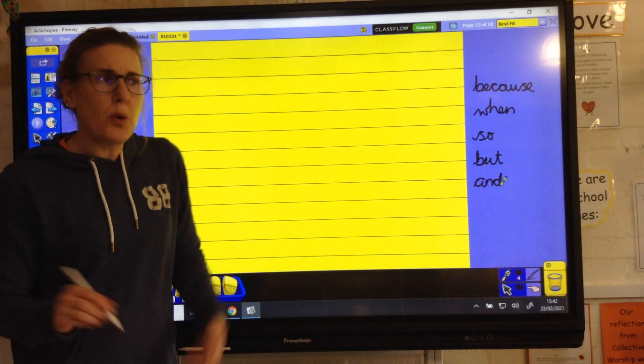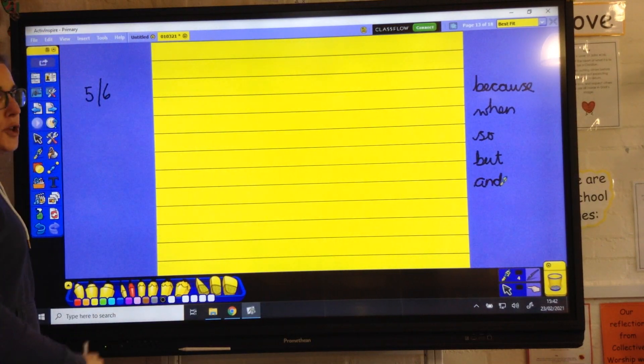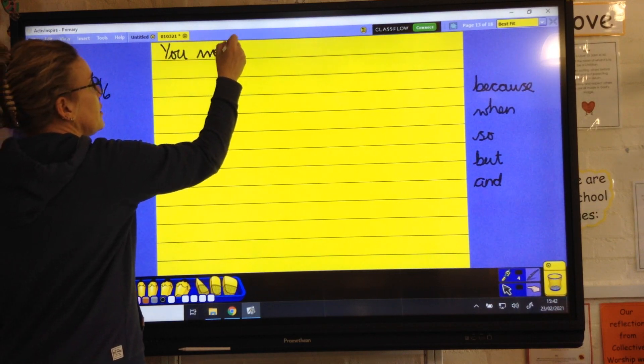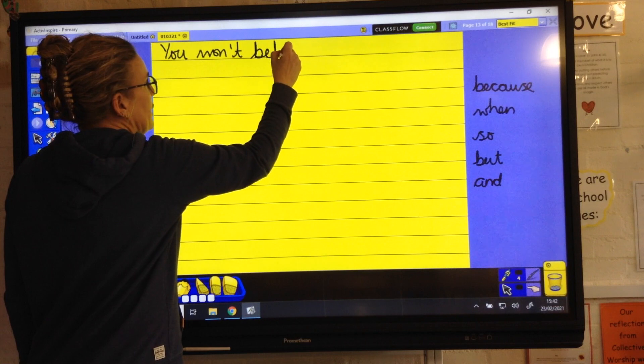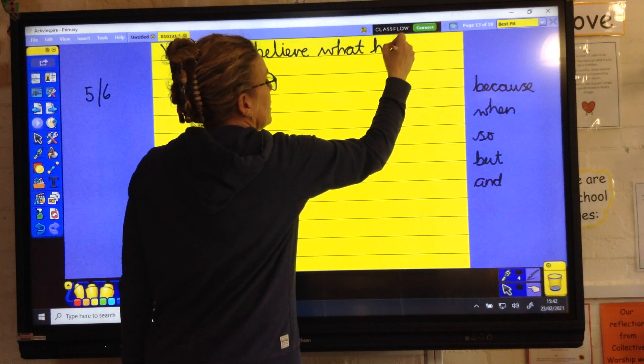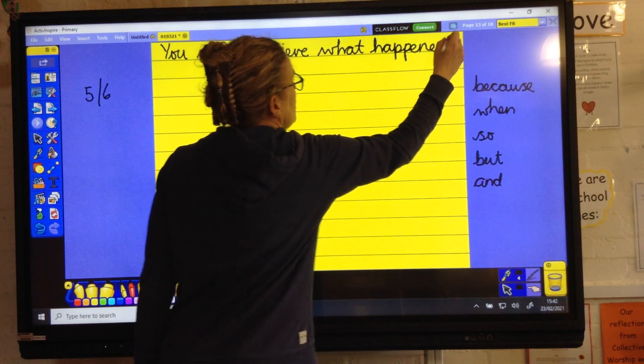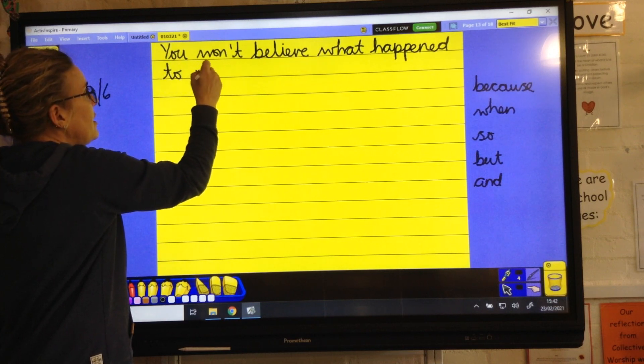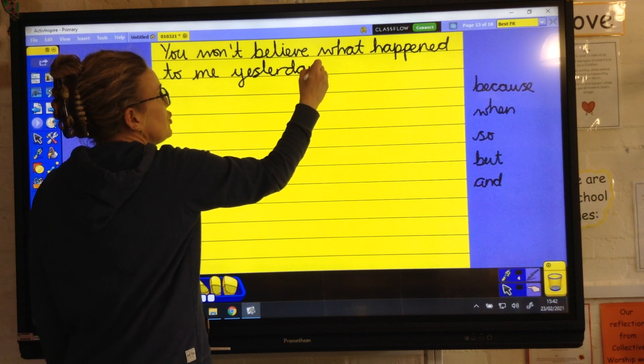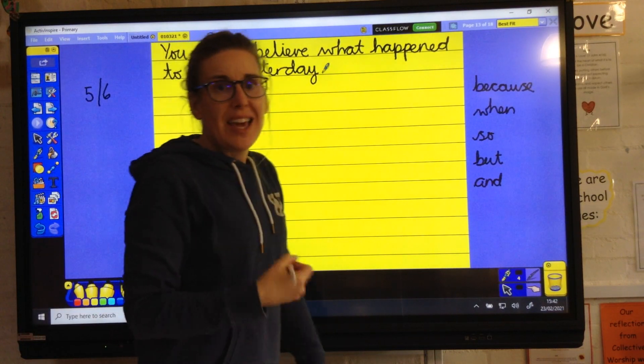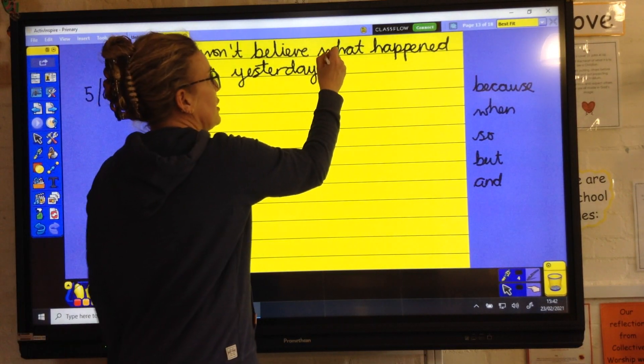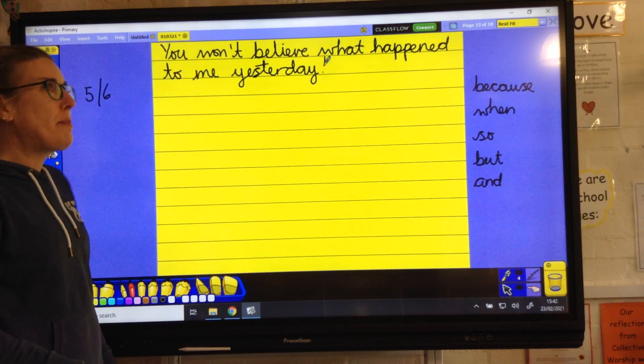You can start off however you want with your writing. I think I'm going to start off. You won't believe what happened to me. I don't like the word believe. Believe what happened to me yesterday. You need a sentence that starts your writing off. It doesn't have to be the same as mine. Could even put an exclamation there. I think I might actually do that.